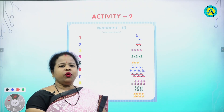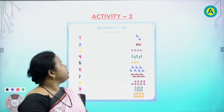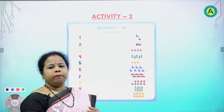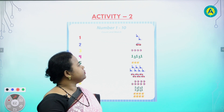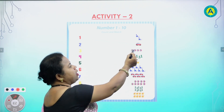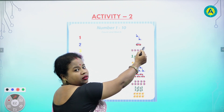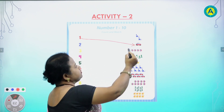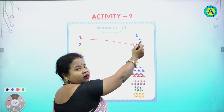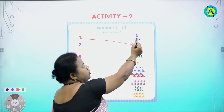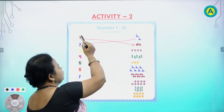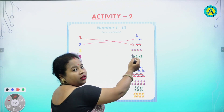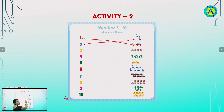Now, children, we do activity 2. Numbers 1 to 10. Count and match. See, how many pictures? Yes, 1. See, how many pictures are there? Count. 1, 2. Let's match with 2. Count the pictures. 1, 2, 3, 4. Where is 4? Yes. Let's match.